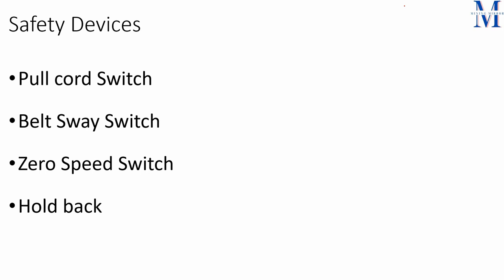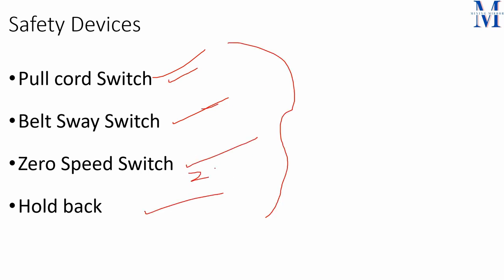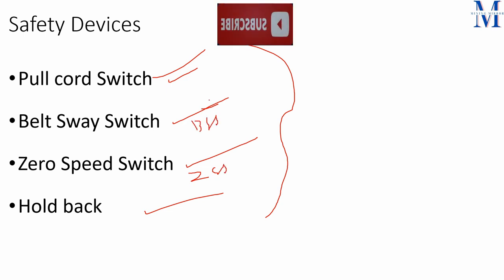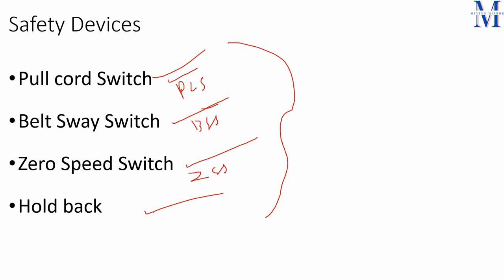Mainly there are four safety devices: first, the pull cord switch; second, the belt sway switch; third, the zero speed switch (ZSS); and fourth, the hold back.